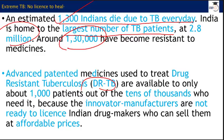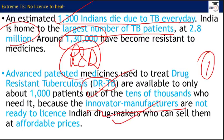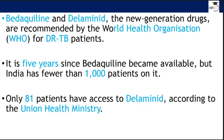Innovator manufacturers from the US and developed countries are not ready to give licenses to Indian drug manufacturers so that we can produce DRTB medicines at affordable prices. There is also a lack of research and development — if TB is such a big issue for India, why are we not investing in it? There are two WHO-recommended medicines for DRTB: bedaquiline and delamanid.